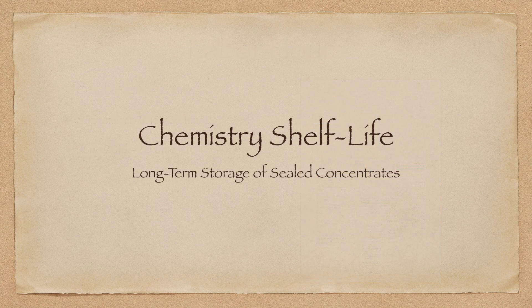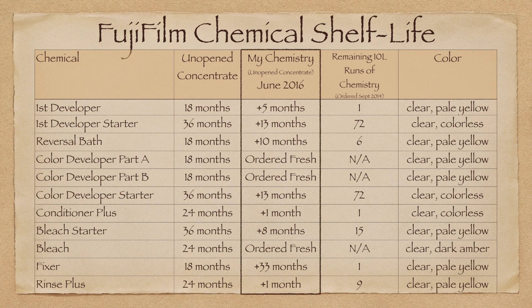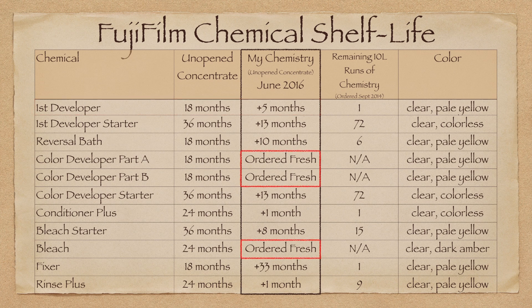The long-term storage of sealed photographic chemicals is of great importance if you purchase this amount of chemistry. In the following slide, I'm going to show you how long my chemistry has lasted past the expiration date by keeping the containers at room temperature in a desert dry environment. The first column lists the chemical. The next column lists how long Fujifilm says the unopened concentrate will last past the production date. This is followed by a column that lists how many months over the time frame suggested by Fujifilm the chemistry was when I developed my film in June 2016 using chemistry that I purchased in September 2014. For example, the first developer is viable for 18 months from the production date according to Fujifilm, but my chemistry was five months beyond this recommendation, so it was 23 months past the production date. Since the color developers and bleach are supplied in quantities to allow you to run the process two times, this third time around I needed to order fresh chemistry, so I don't have long-term data for those respective cells.